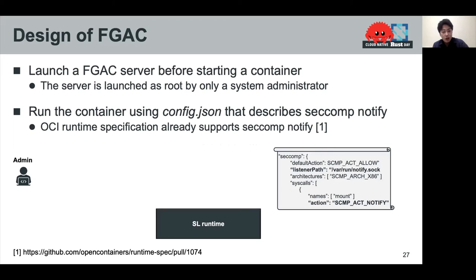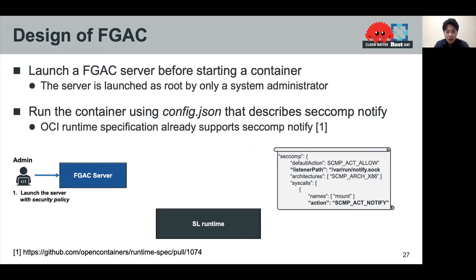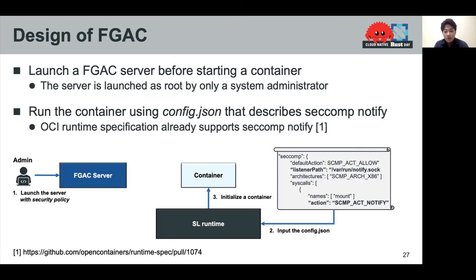This slide shows how SL runtime implements fine-grained access control using seccomp notify. First, a system administrator launches a fine-grained access control server as root before starting a container. Second, the user runs a container using config.json that describes the seccomp notify configuration. A few months ago, the OCI runtime specification added seccomp notify support to use it in containers. In the configuration file, listener-path specifies the path of a Unix domain socket, which is used by the seccomp notify action. A user creates a rootless container using this configuration. After SL runtime receives a create request, the runtime initializes the container and creates a seccomp notify file descriptor. Then the runtime passes the descriptor to the server.